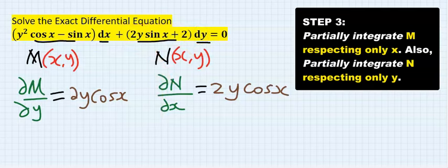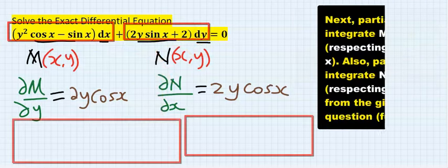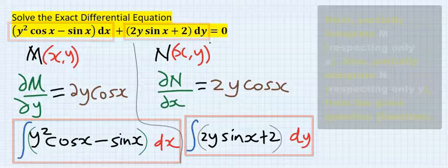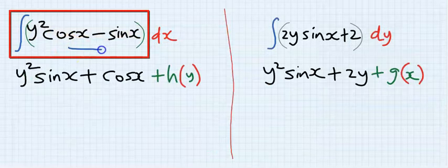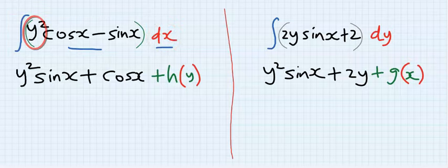If I integrate this partially with respect to x, then I will be partial against y and integrate. For cos x, I'm going to have sin x.